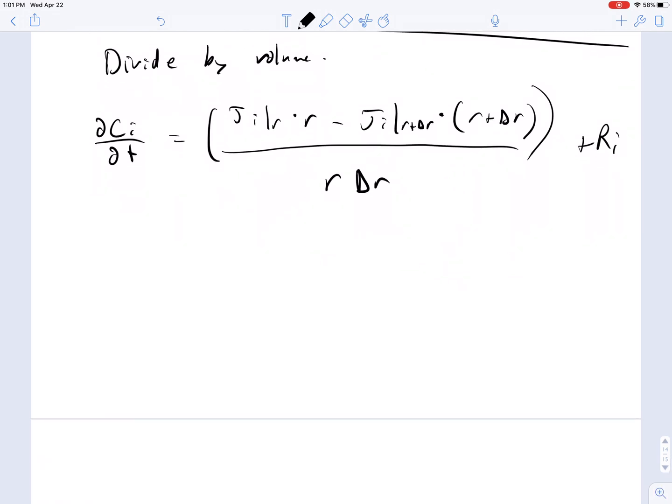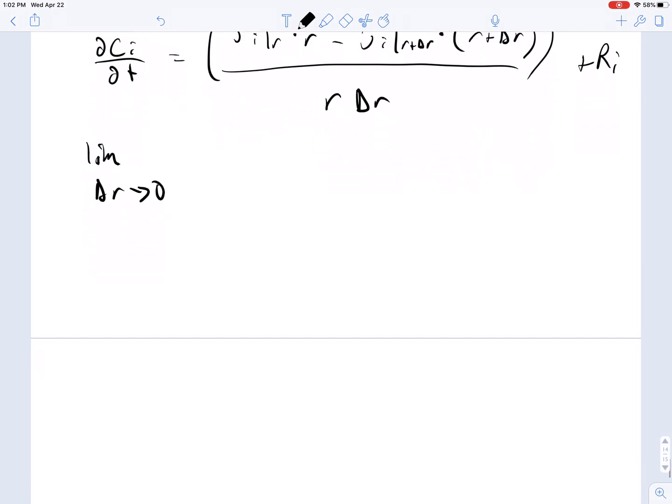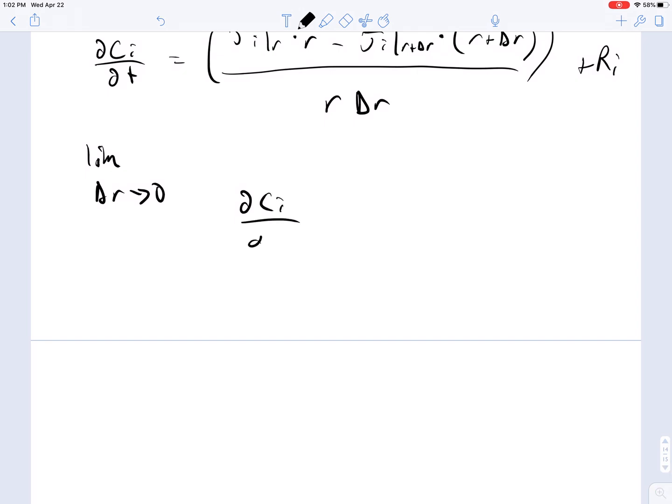And of course this applies only for delta R that is small enough. So what we do next is divide by volume to take this to the next simplification. So you end up with ∂C_I/∂t equals J_I at position R times R minus J_I at R plus delta R times (R + ΔR), all this on the top, all divided by RΔR when you divide through by that, and then plus the reaction term. So if we take the limit now as delta R gets very small, goes to 0, we end up with this partial differential equation that looks a little different than the one we had before because there's an extra R term: minus 1/R times ∂/∂R(RJ_I) in the R direction, all divided by ∂R, plus R_I.